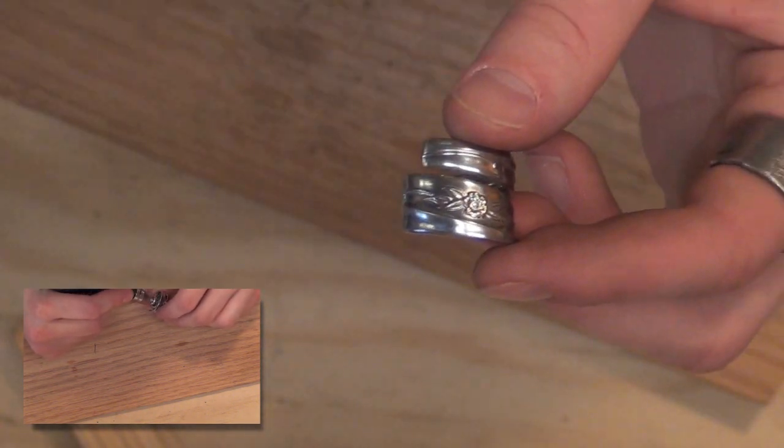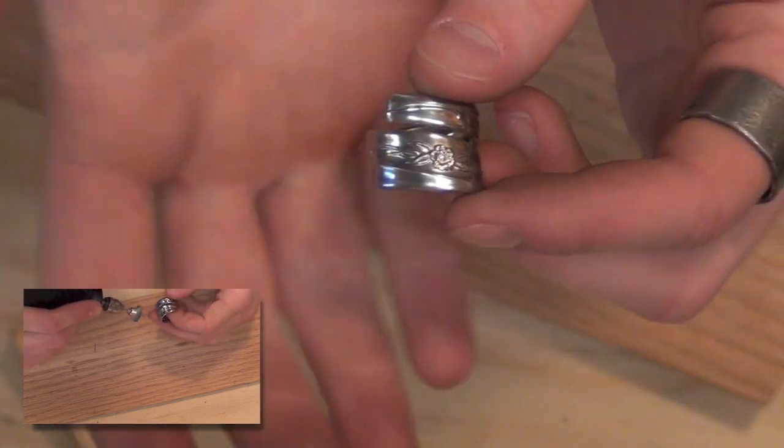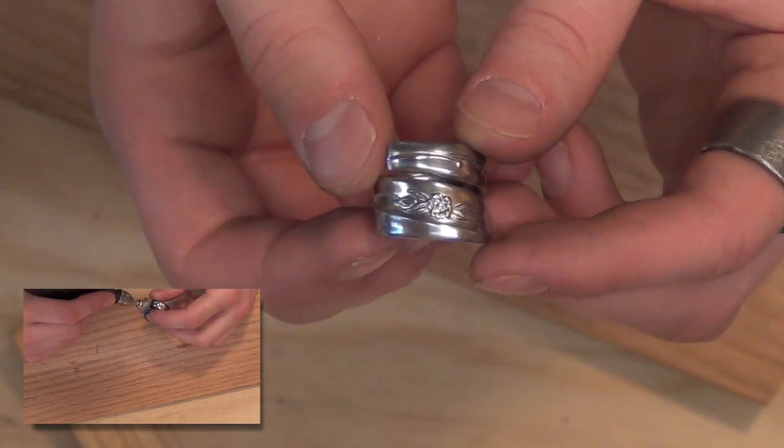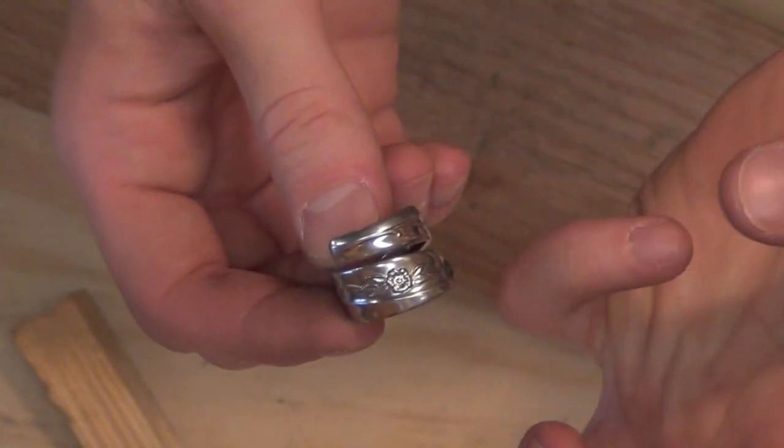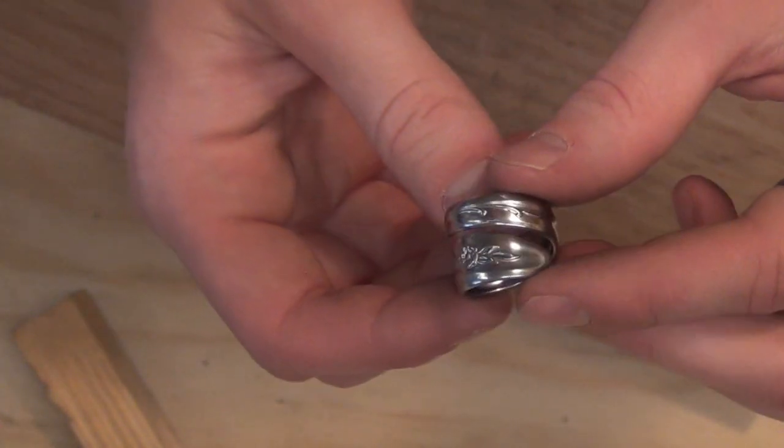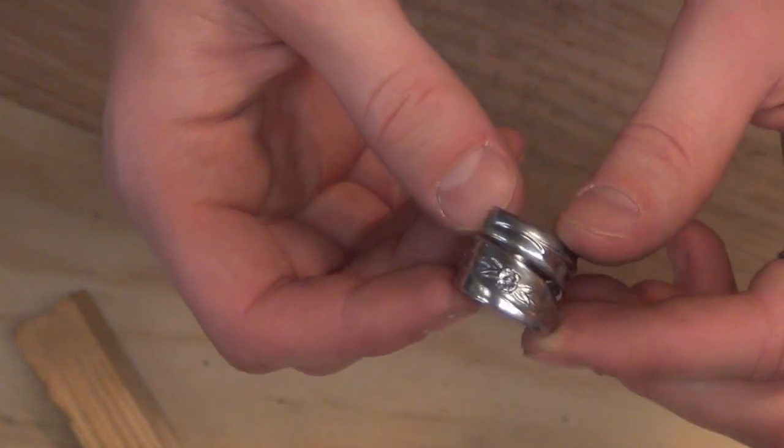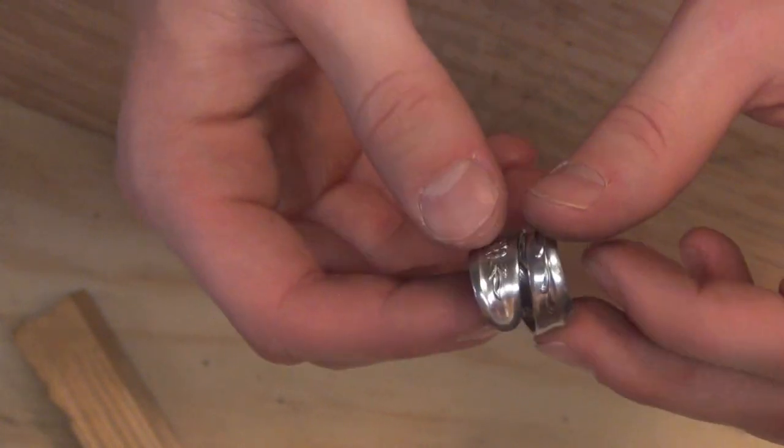After that, if you have silver polish or tarnish remover, use that. Or if you have a magical rag that I like to call it—it's like this rag impregnated with these polishing oils—you can use that and it will shine like a mirror.